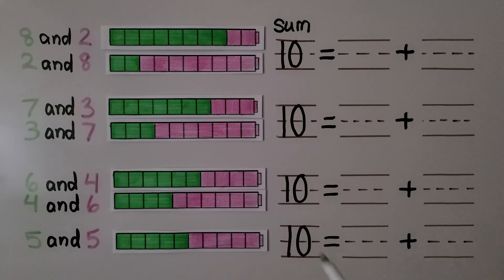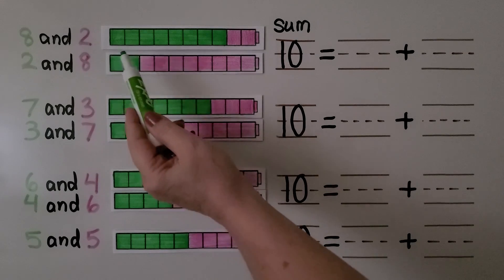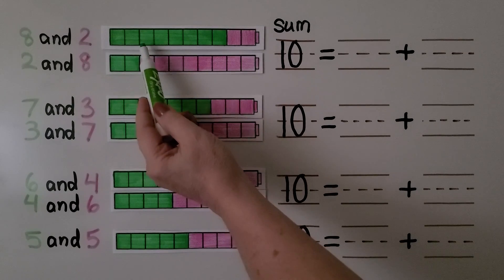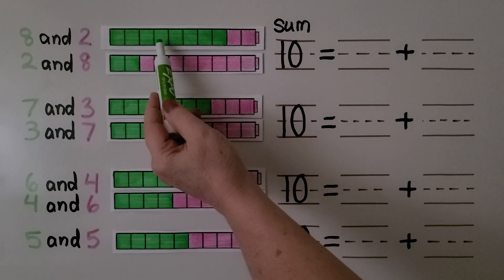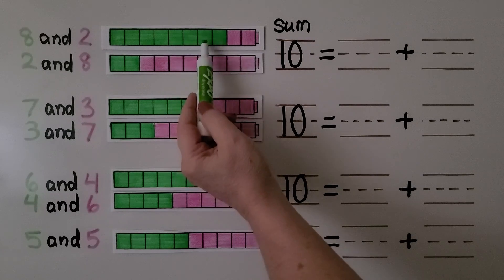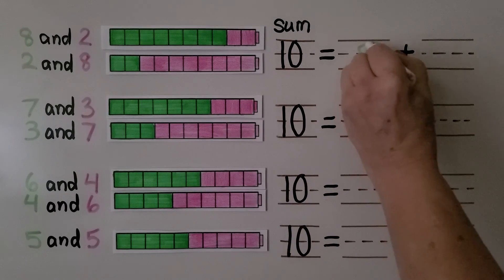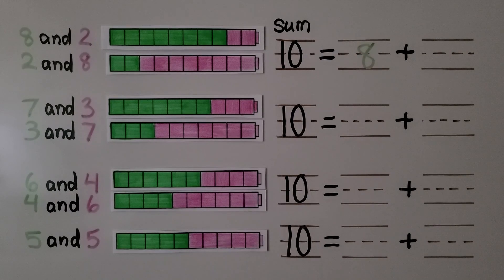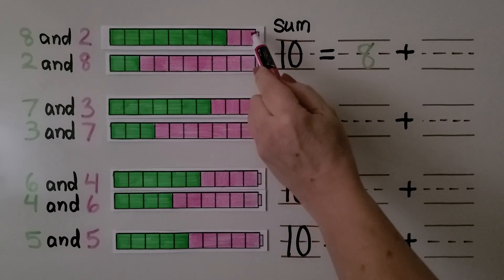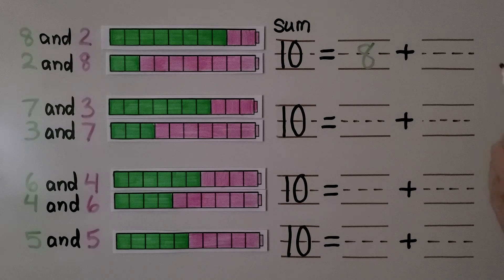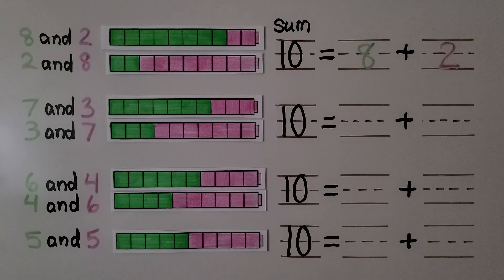We can count the green cubes: one, two, three, four, five, six, seven, eight — we write eight. We can count the pink cubes: one, two — there are two pink ones, so we write two. It doesn't matter if we add eight plus two or two plus eight; it will still equal ten.